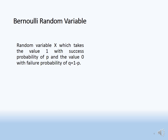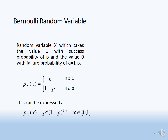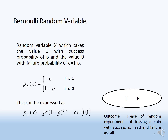A Bernoulli random variable can take the value one with success probability p, or zero with failure probability q = 1 - p. The probability is denoted P(x) = p if x = 1, or 1 - p if x = 0. In compact form, this is P(x) = p raised to power x times (1 - p) raised to power (1 - x).